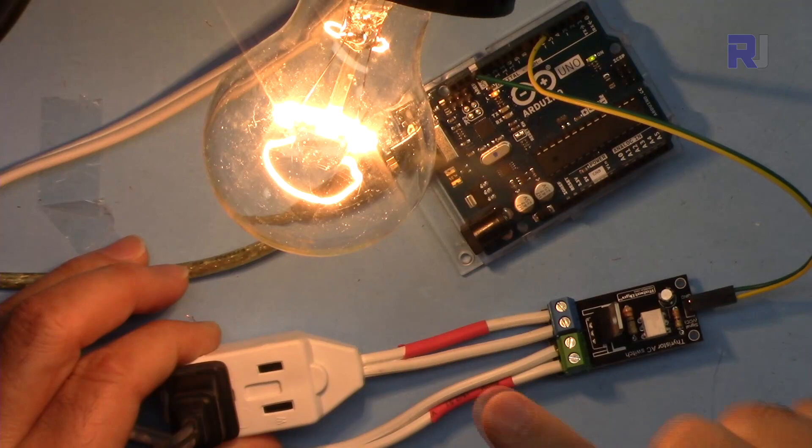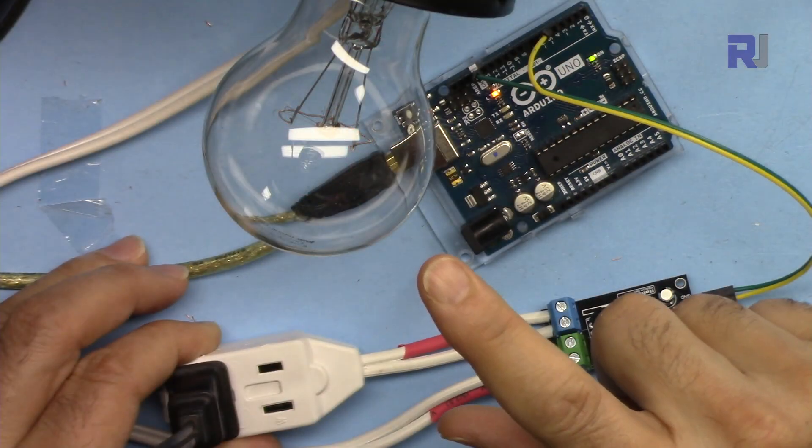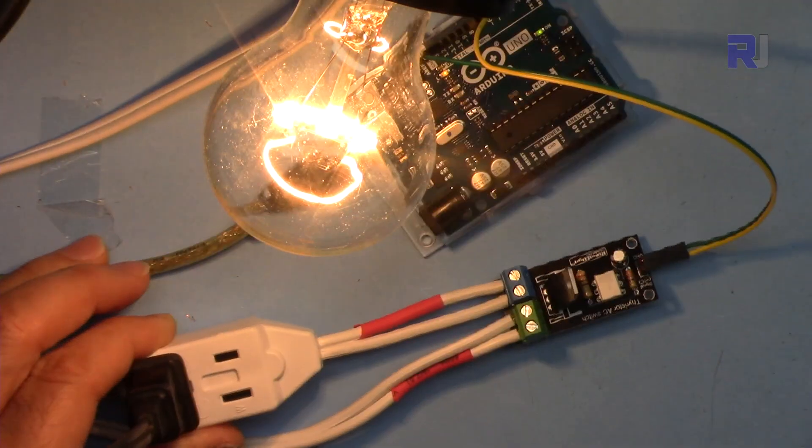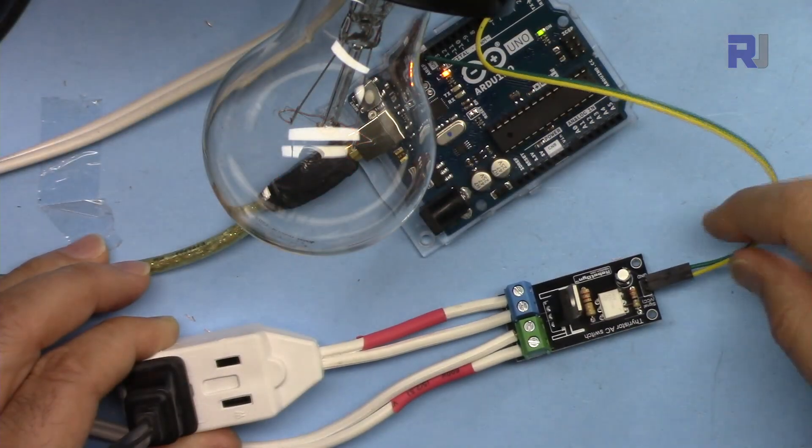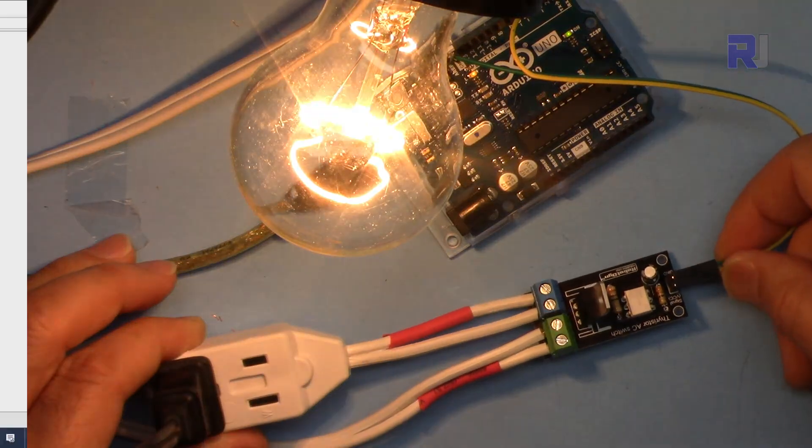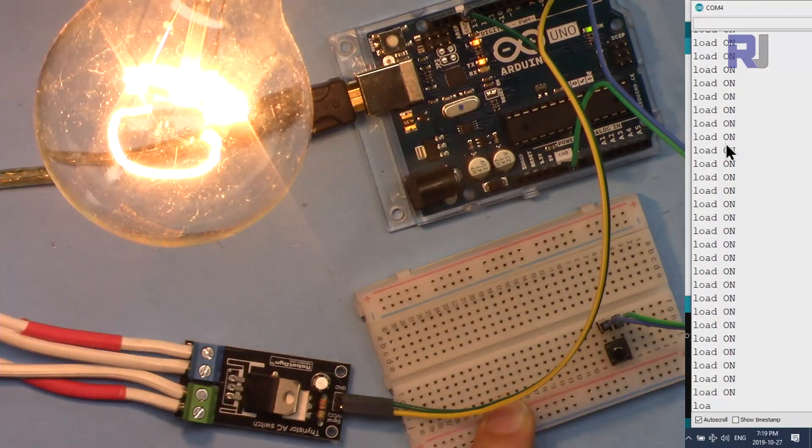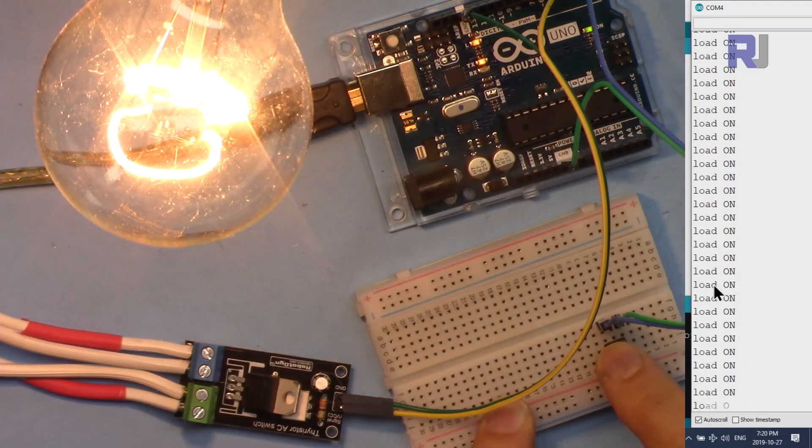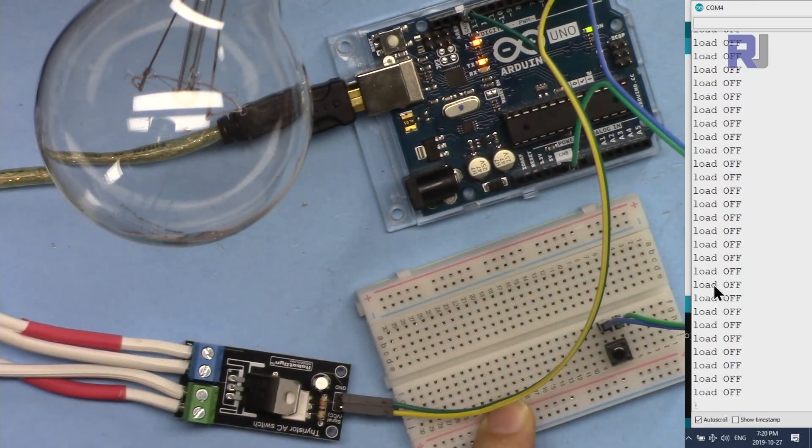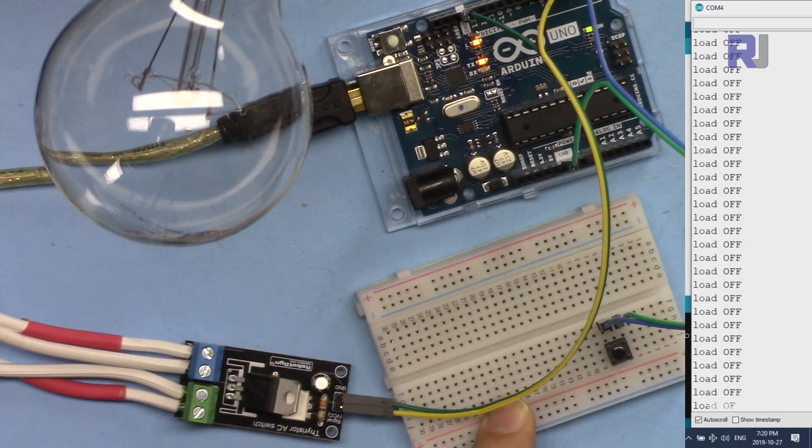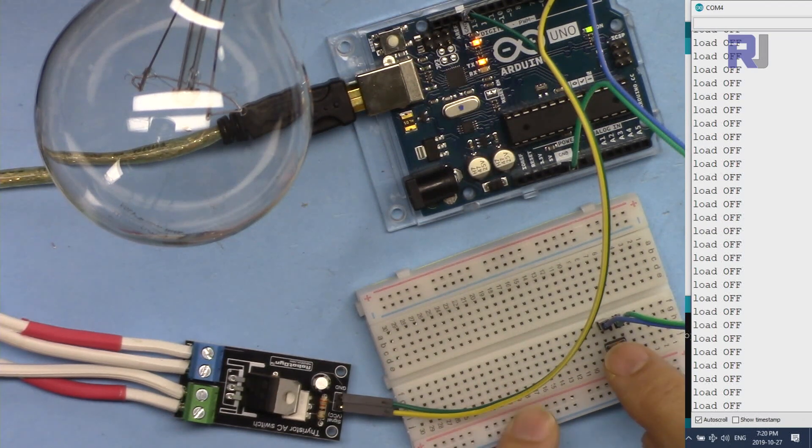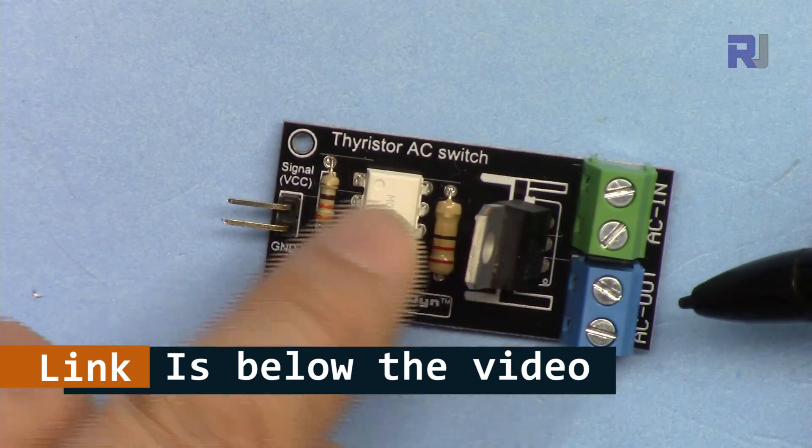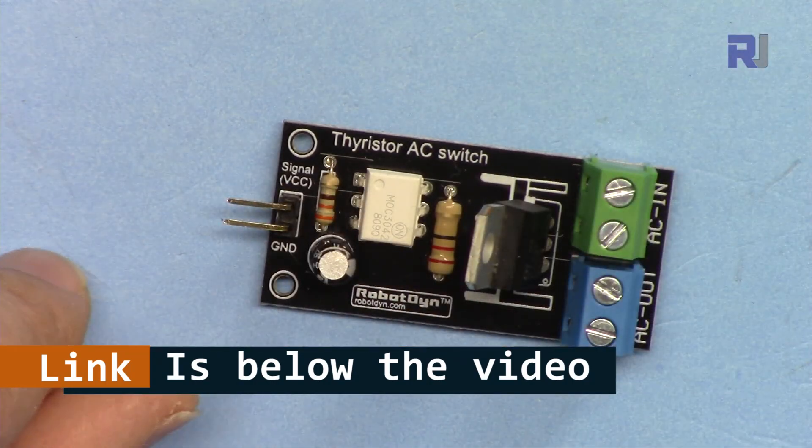I have a separate video explaining how to use this AC switch to control an AC load with Arduino without a push button via the signal. A separate video explaining how we can use this with a single push button and Arduino, so you push the button the load will be on and push the button the load will be off. A link for the other videos related to this module is below the video in the description.